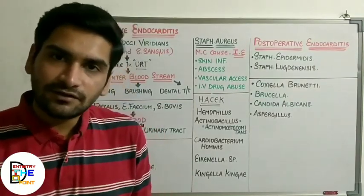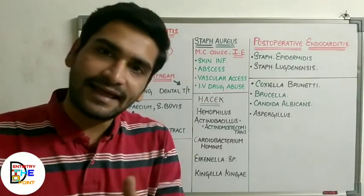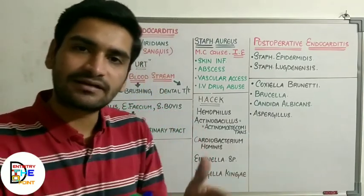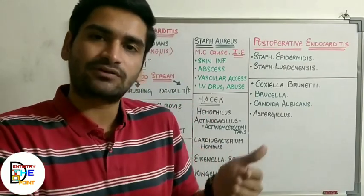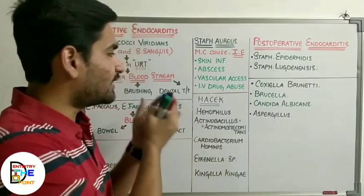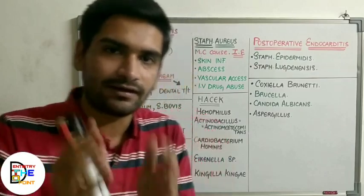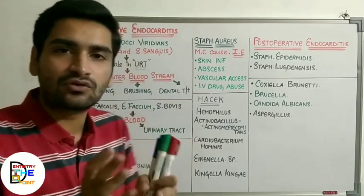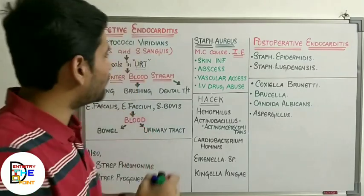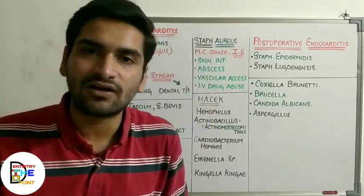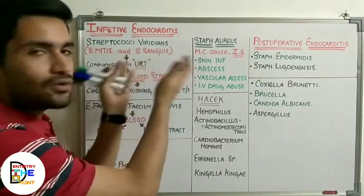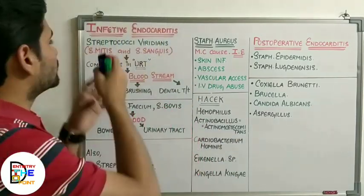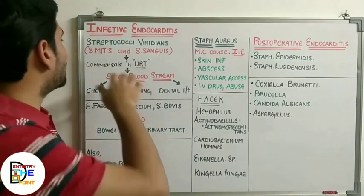After discussing the introduction and pathophysiology, we now discuss the various microorganisms and how they enter the endocardium — through the bloodstream. Any microorganism that needs to reach the endocardium, prosthetic valve, or prosthetic material must enter the bloodstream. Two groups are most commonly responsible for infective endocarditis: Streptococcus viridans and Staphylococcus, together causing 75% of total cases.